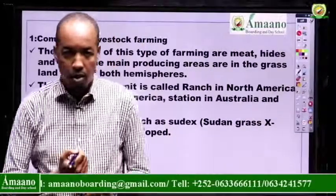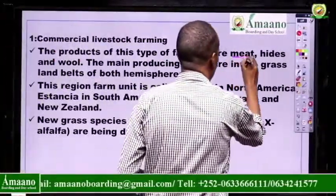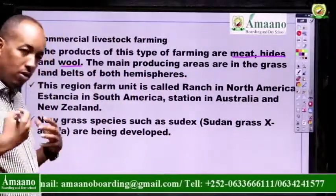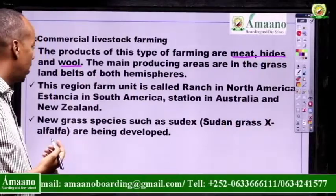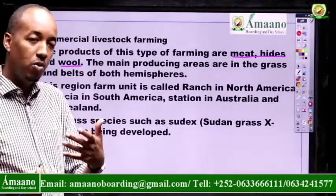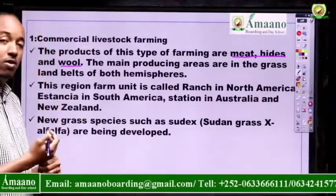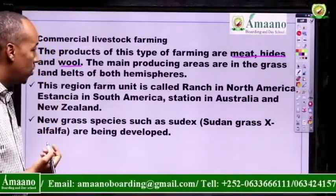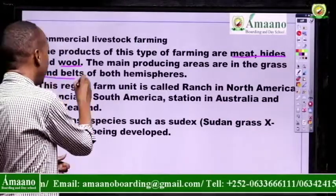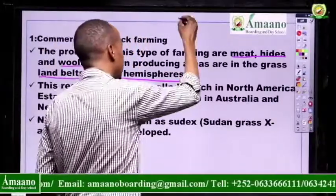What are the products of this type of farm? The products are meat, hides, and wool. When we say wool, we are talking about the wool covering of sheep. Meat, hides, and wool. Some of the sheep are reared here and the byproduct is wool. The main producing areas are in the grassland belts of both hemispheres.